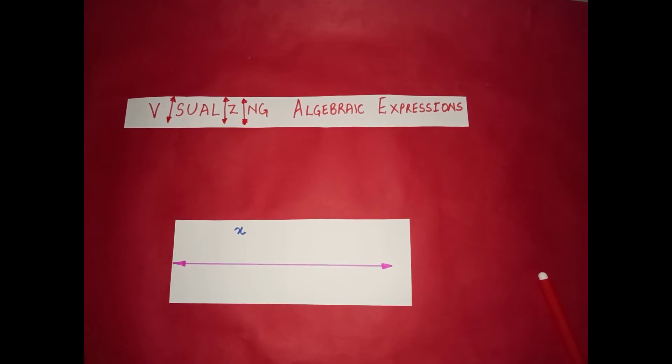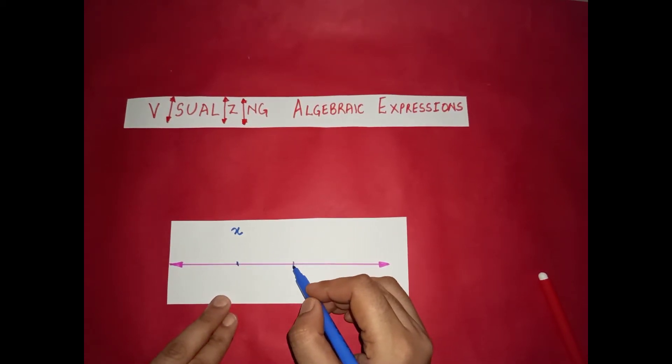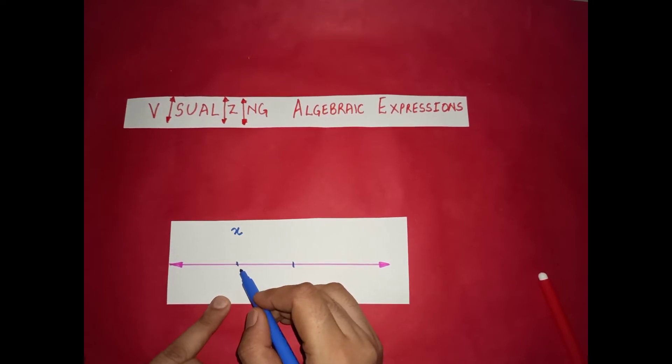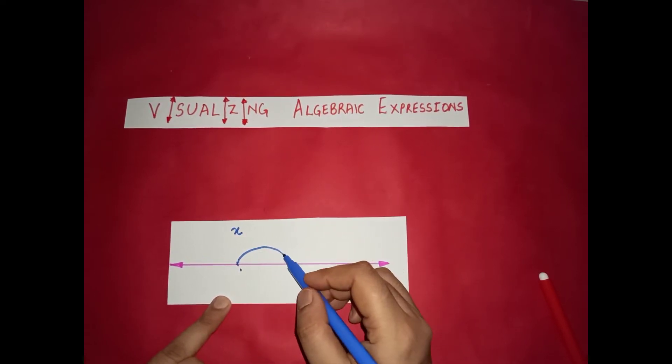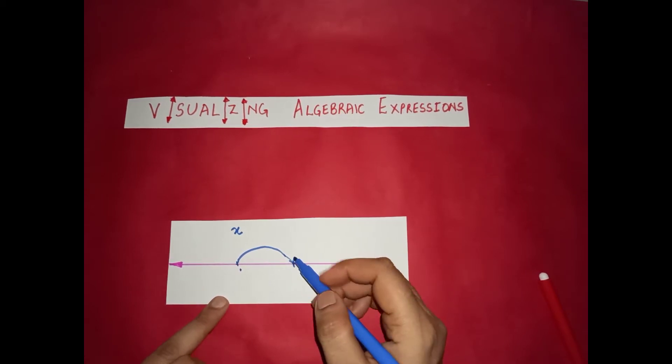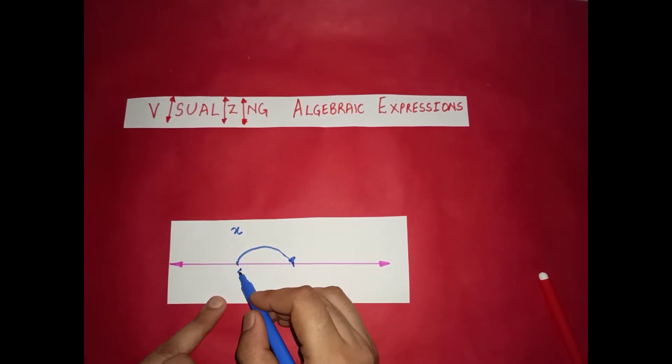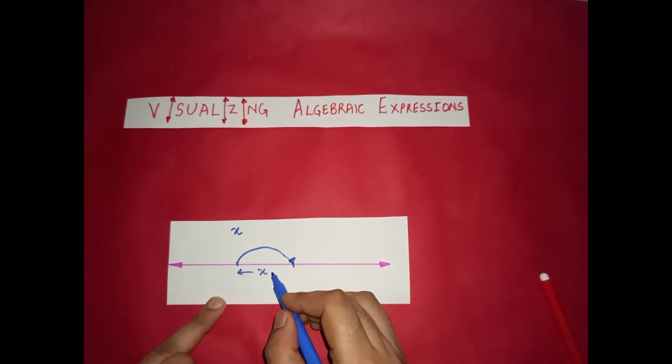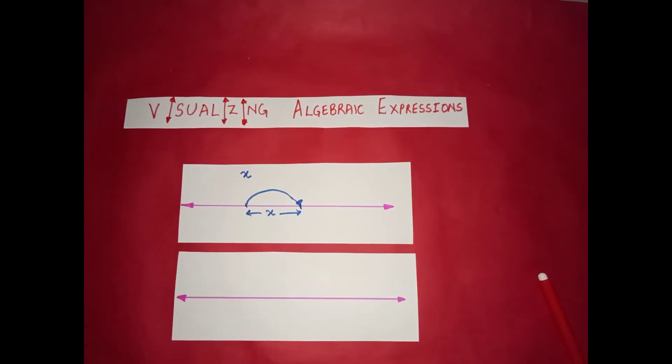It can take any value, but to represent it on the number line I am just going to assume that the distance covered when we make a jump of x units is this. So to represent x we need to make one jump of x. So this represents x distance covered on the number line. We have just visualized x.